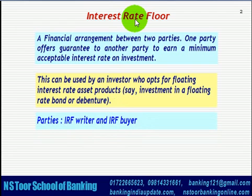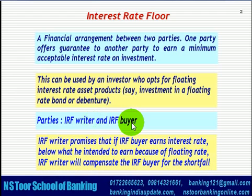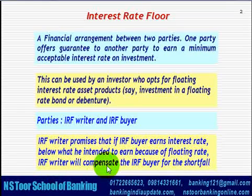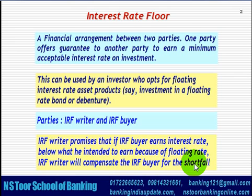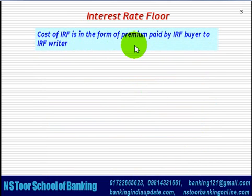In the case of interest rate floors there are two parties: one is the IRF writer and the other is the IRF buyer. The IRF writer promises that if the IRF buyer earns an interest rate below what he intended to earn because of the floating rate, the IRF writer will compensate the IRF buyer for the shortfall. The cost of the IRF is in the form of a premium which is paid by the IRF buyer to the IRF writer.